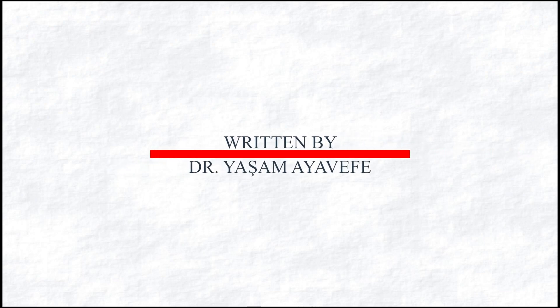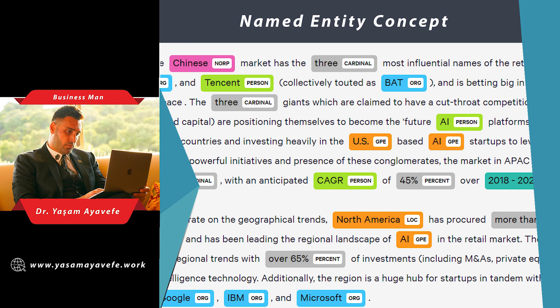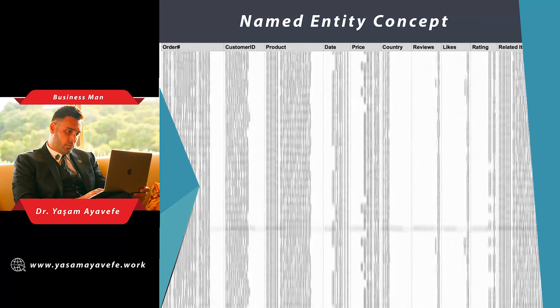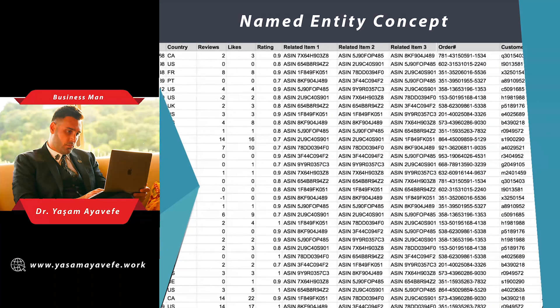Written by Dr. Yasum Iyavif. Named Entity Concept. Recognition and disambiguation of named entities have their origins in computational linguistics. These disciplines, which were later accepted as subtasks of information extraction, quickly attracted the attention of different scientific fields such as biology and biomedicine, or application areas such as semantic web and information sciences.